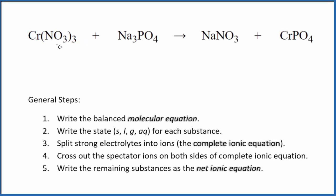Let's write the balanced net ionic equation for Cr(NO3)3 plus Na3PO4. This is chromium(III) nitrate and we have sodium phosphate.